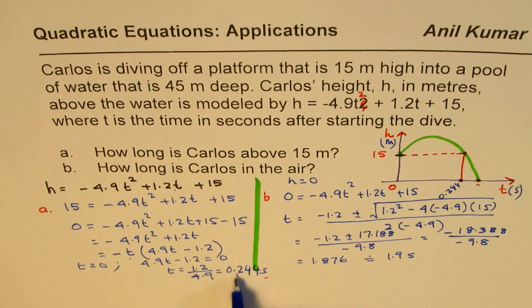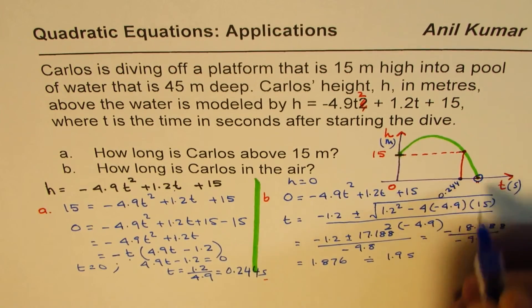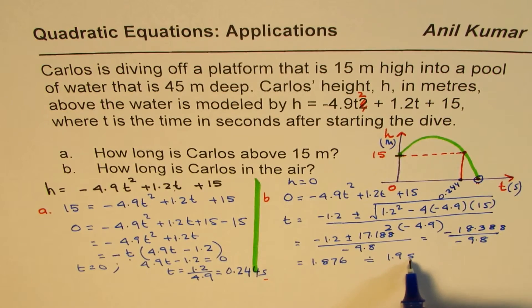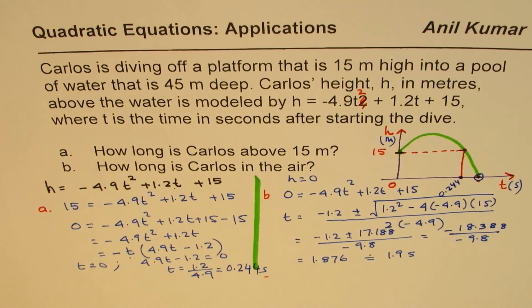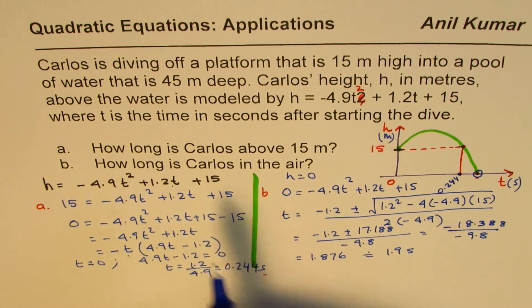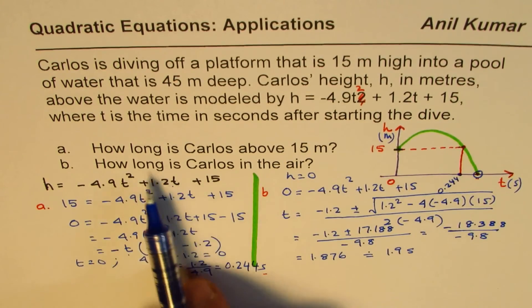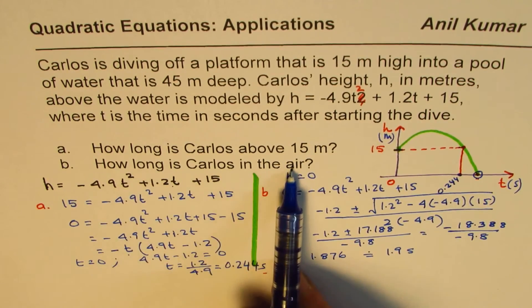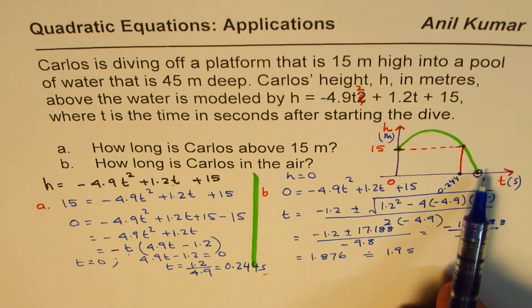But I hope with this you understand how to solve such an equation. How long Carlos is above 15 meters? It means h is 15. How long Carlos is in the air? That means when it touches the water level. At that time, height is 0.